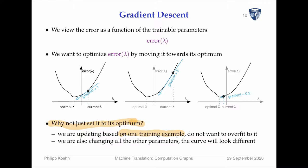We don't just set parameters to their optimum because we're updating based on one training example at a time, so we don't want to overfit. The way we do our updates actually updates each parameter in isolation — so once you change all the other parameters, the error curve is going to look very different.